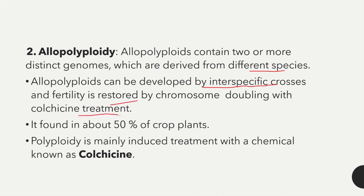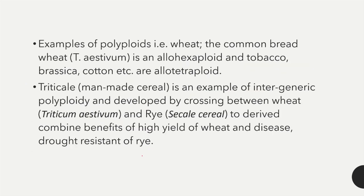Allopolyploidy is found in 50 percent of crop plants. Polyploidy is mainly induced by treatment with a chemical known as colchicine. Examples of allopolyploids include wheat — common bread wheat Triticum aestivum — which is a hexaploid, and other examples are tobacco, Brassica, and cotton, which are allotetraploids.